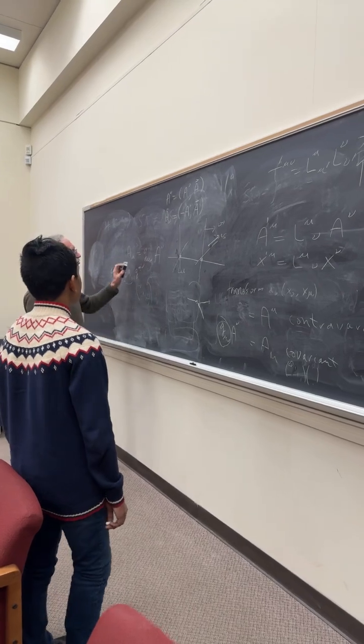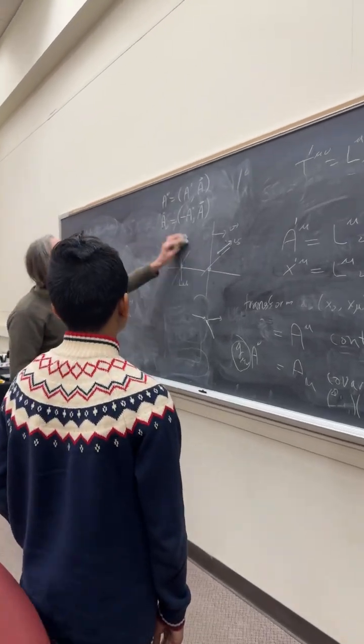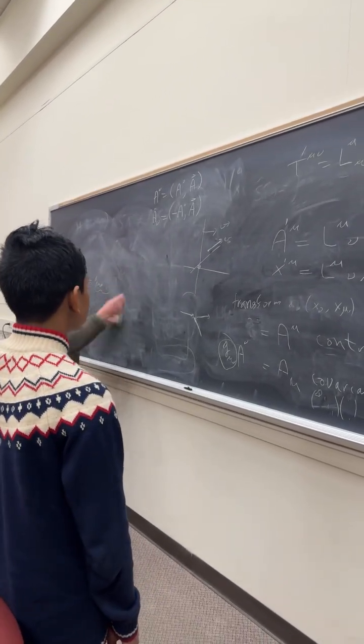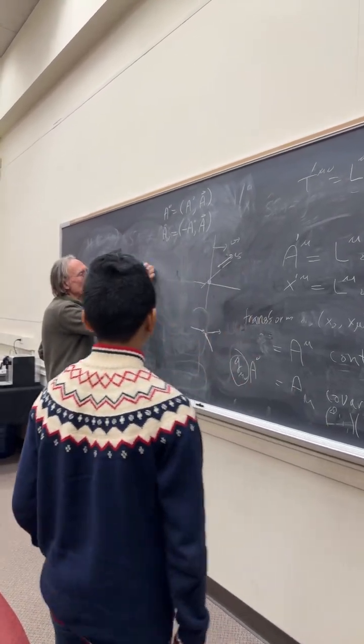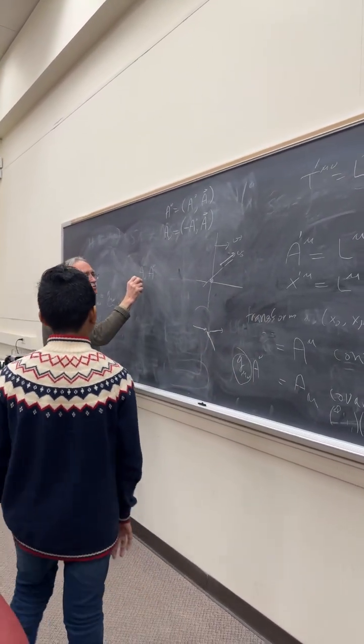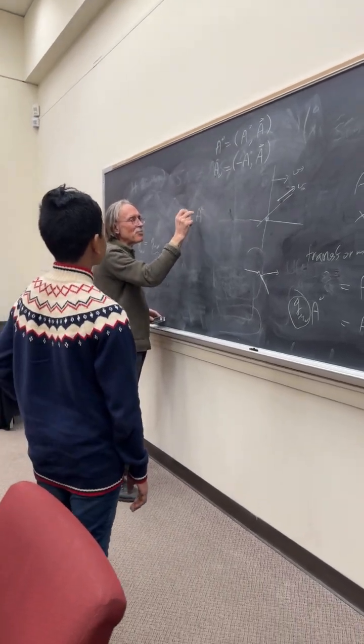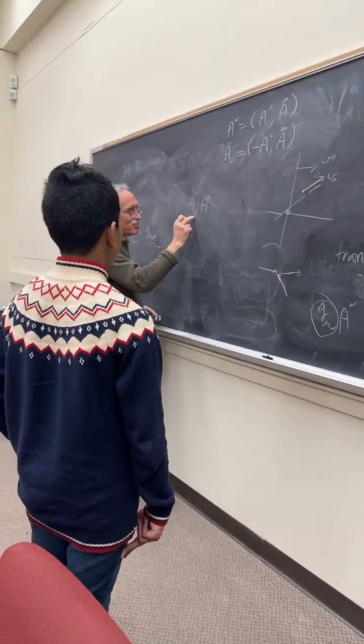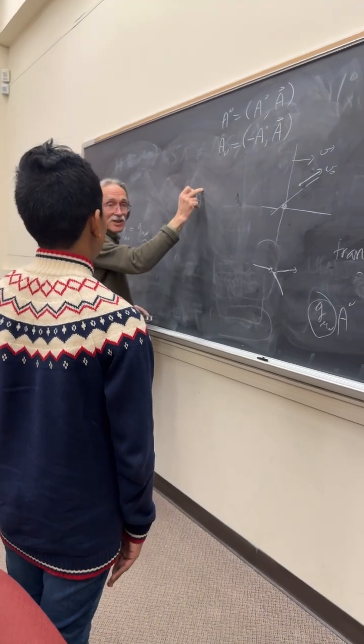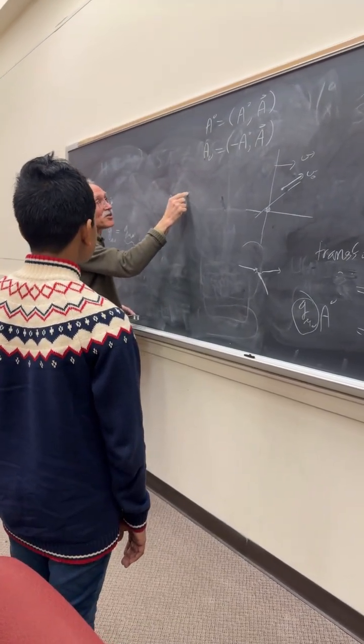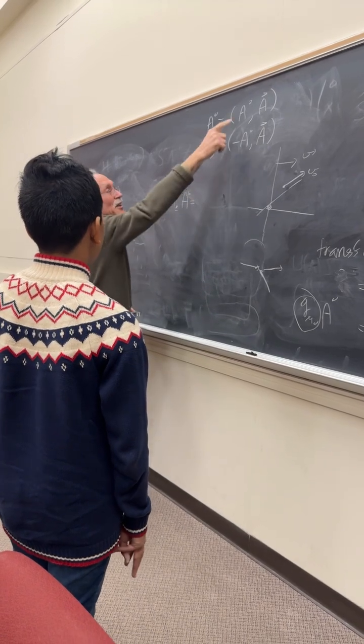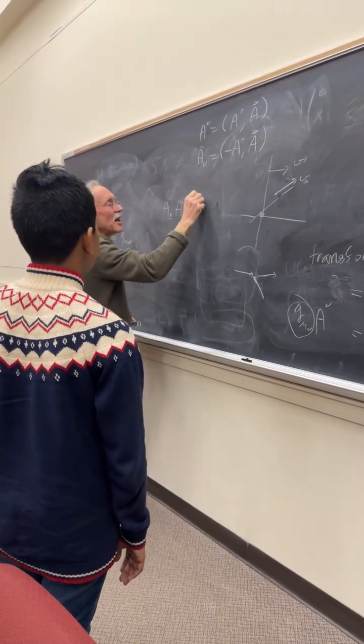The reason why I'm doing this is that if you look at the product, a mu, a mu, when you multiply, the rule is when you multiply and contract, this is making that equal, it's called contraction. And so on, and one is lower and the other is upper. And if you do that, if you multiply these two, and you...